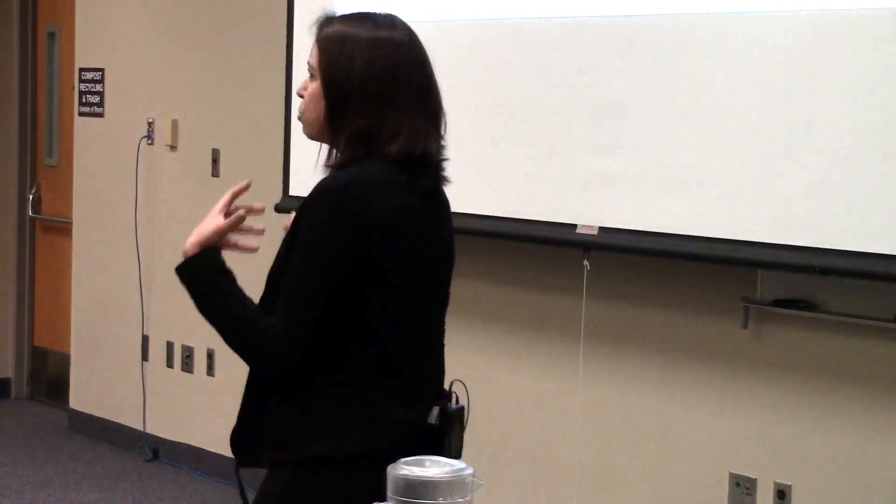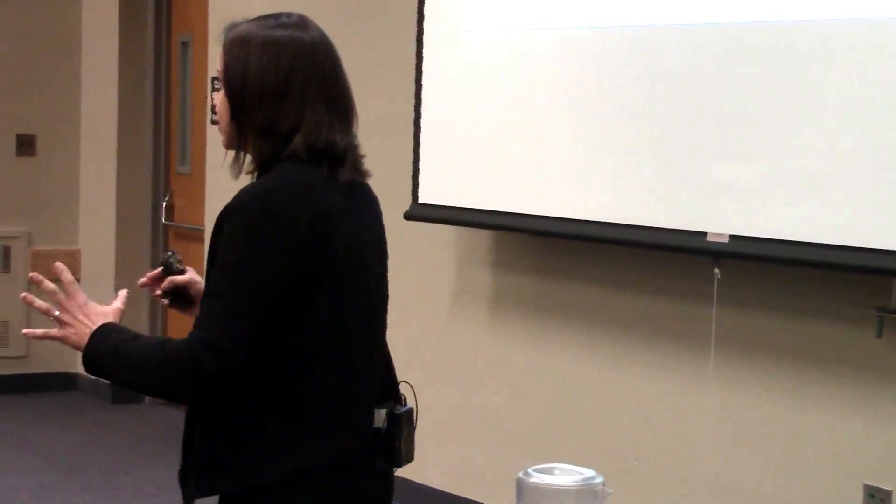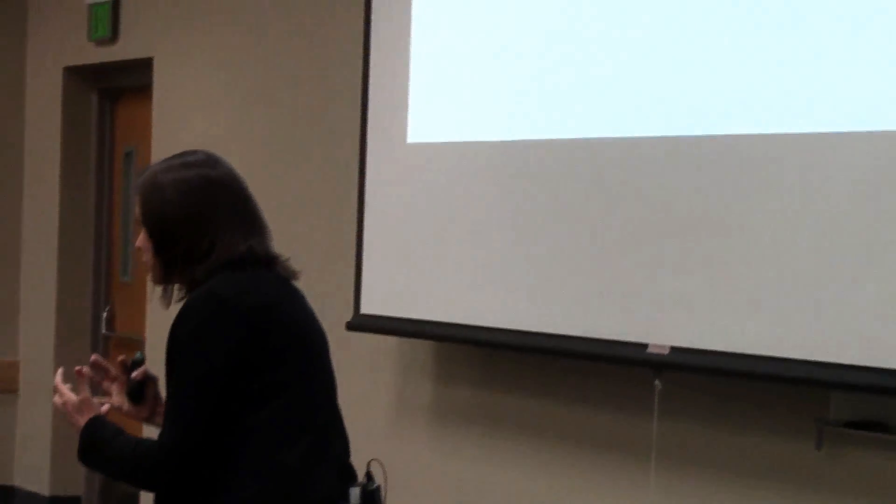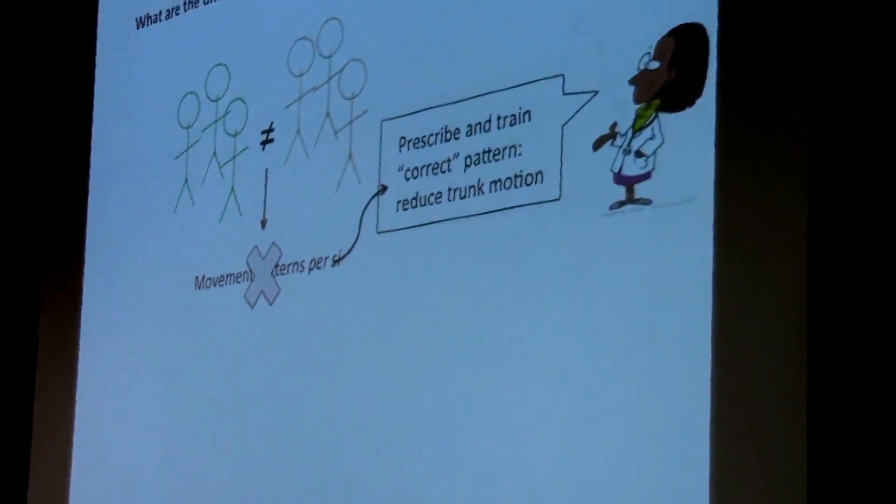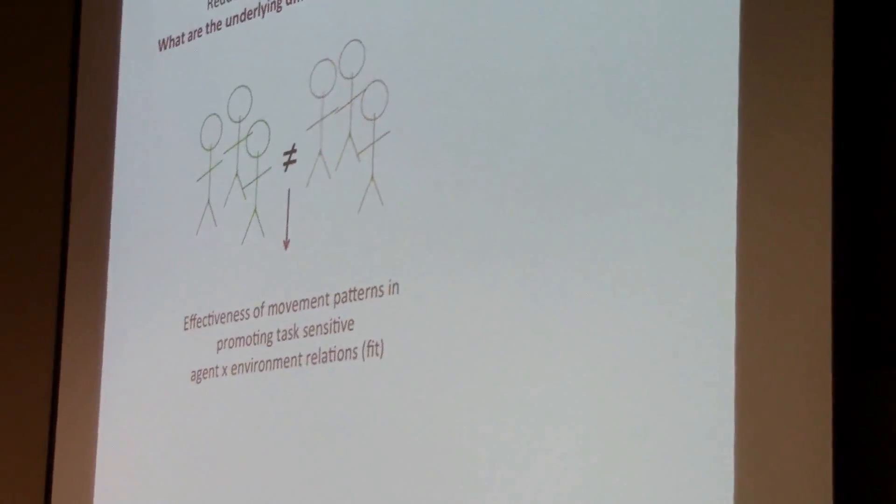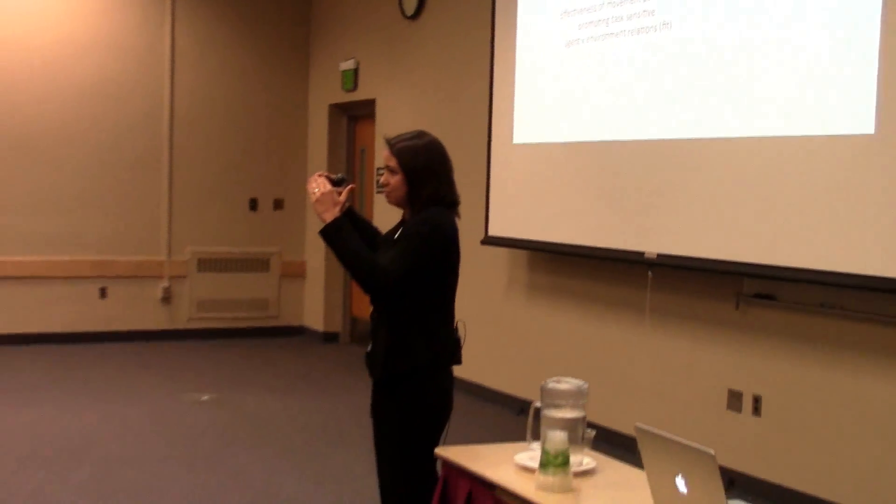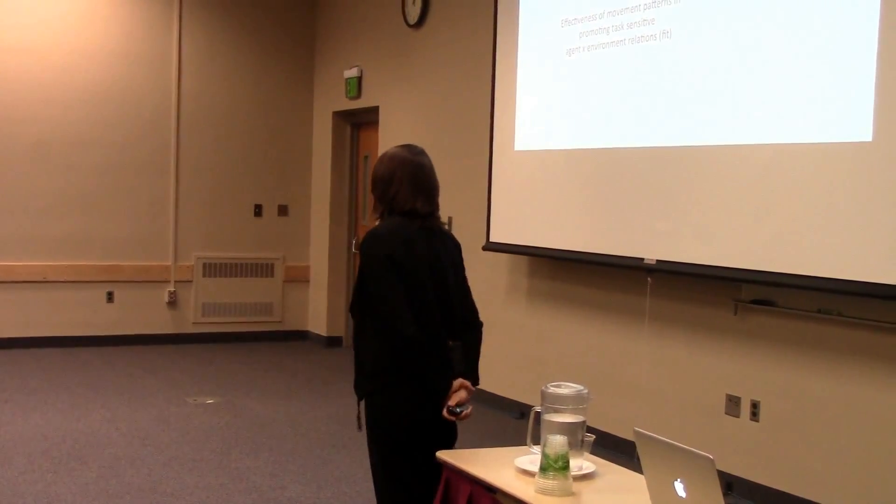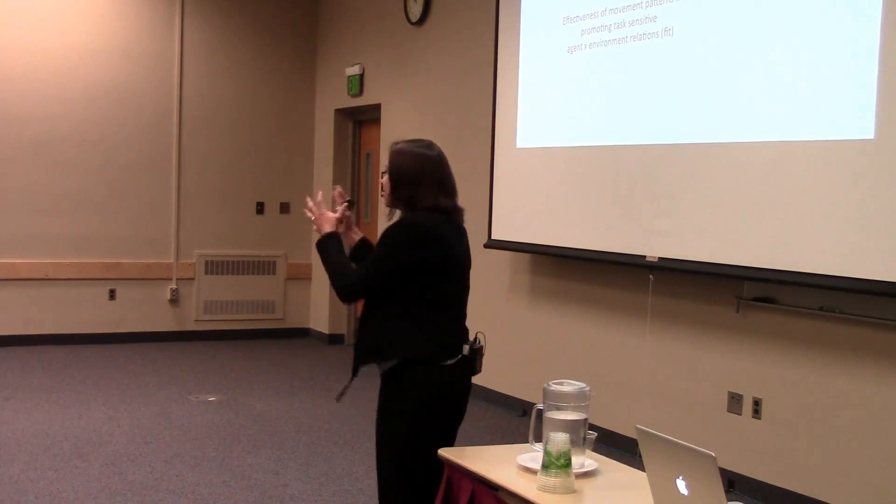Per se. So what should shape our interventions is not the idea of prescribing a correct normal pattern, such as let's constrain movements of the trunk in people that increase movements of the trunk, because that actually might be a good thing for performance. What we actually need is to be able to look at how effective these movement patterns that are showing up are in promoting task-sensitive agent-environment relations. And evaluating this effectiveness might actually require us to bring in more analysis and tools that will have us look into a different level of analysis, such as whether the coordination patterns are stable enough, or the behavioral dynamics is what you want with that different pattern.